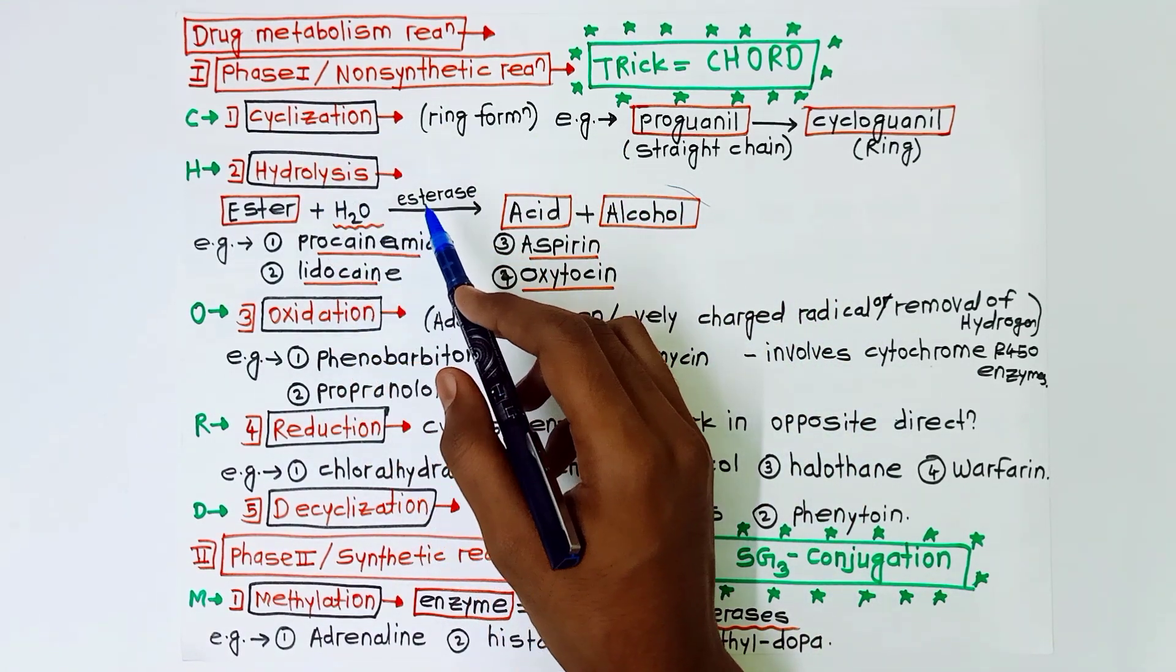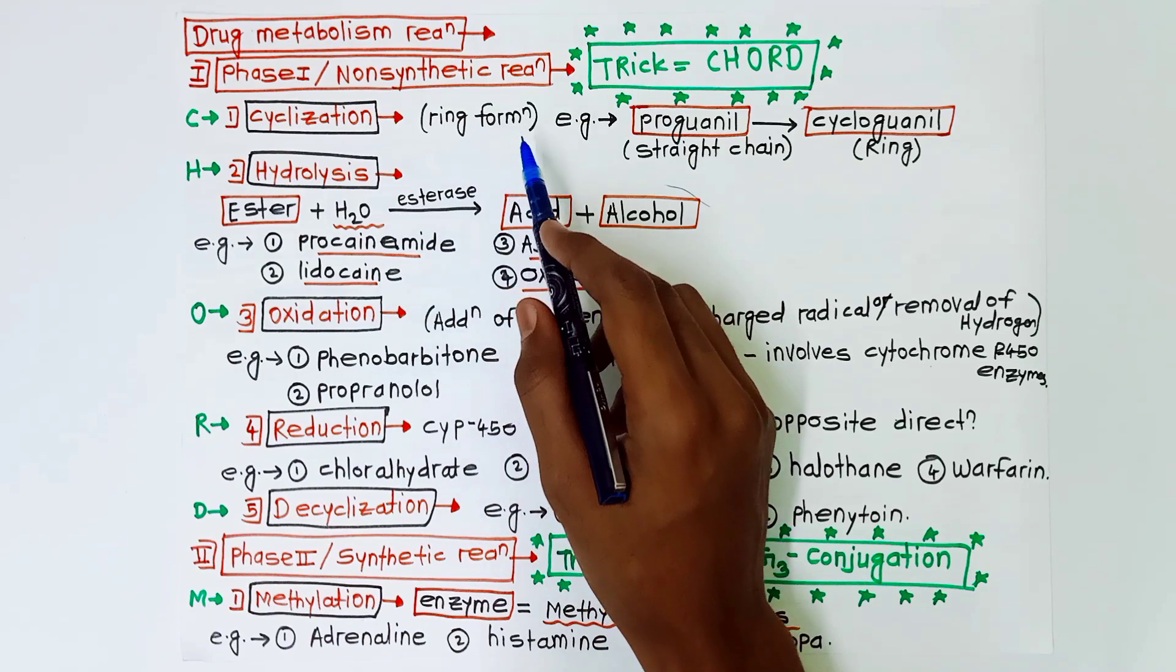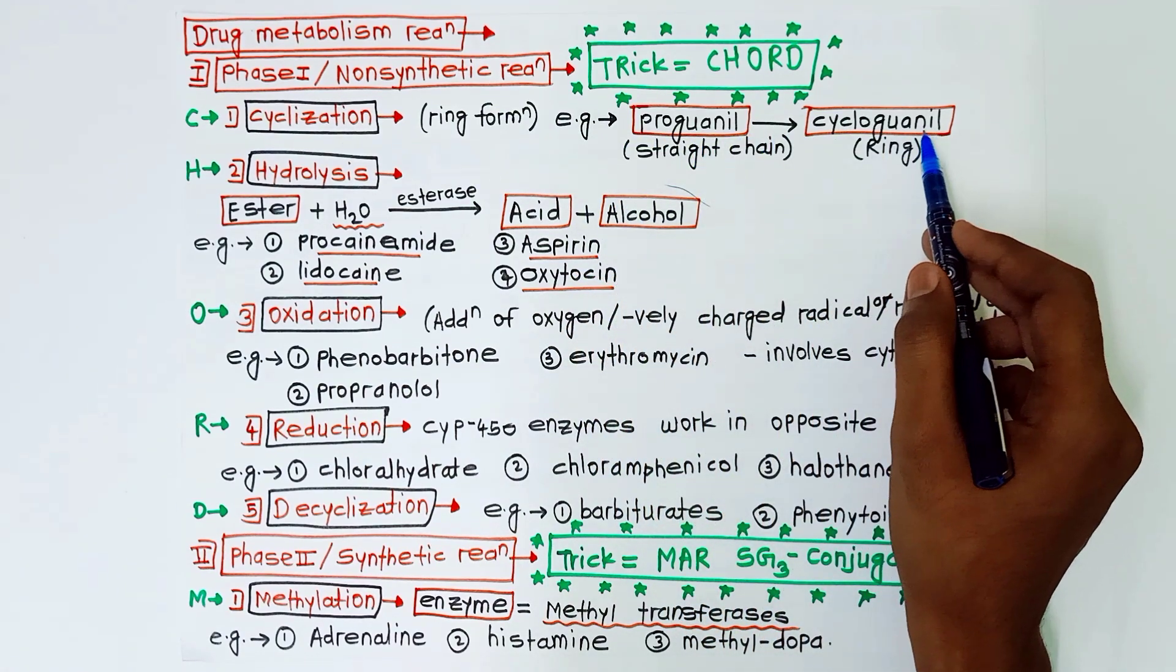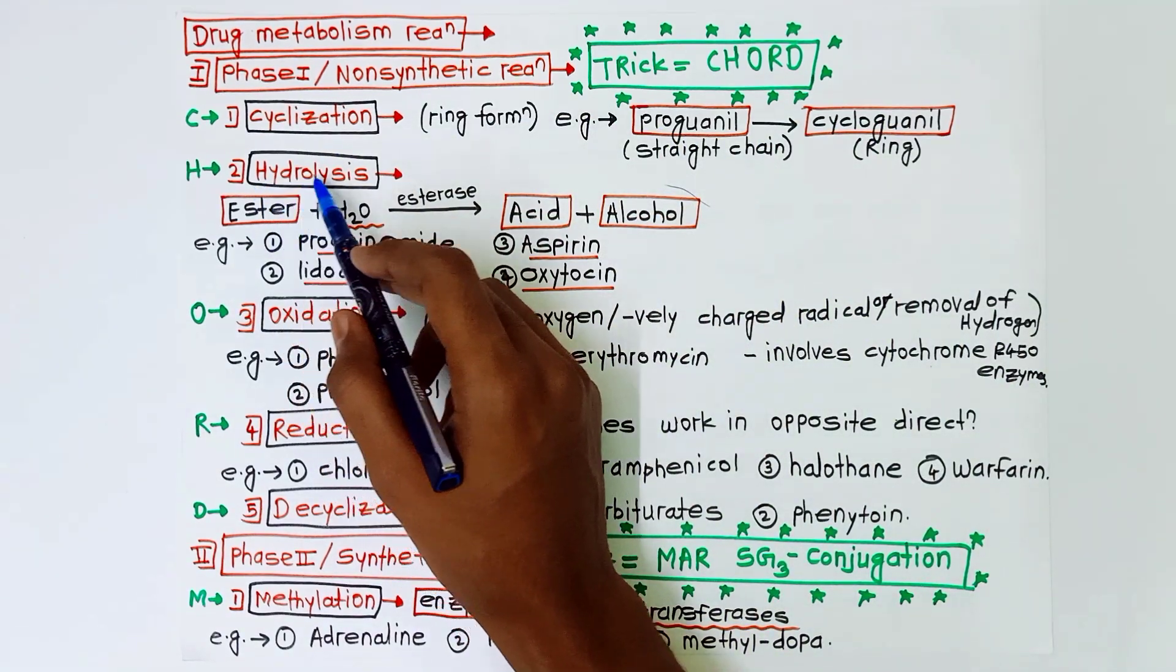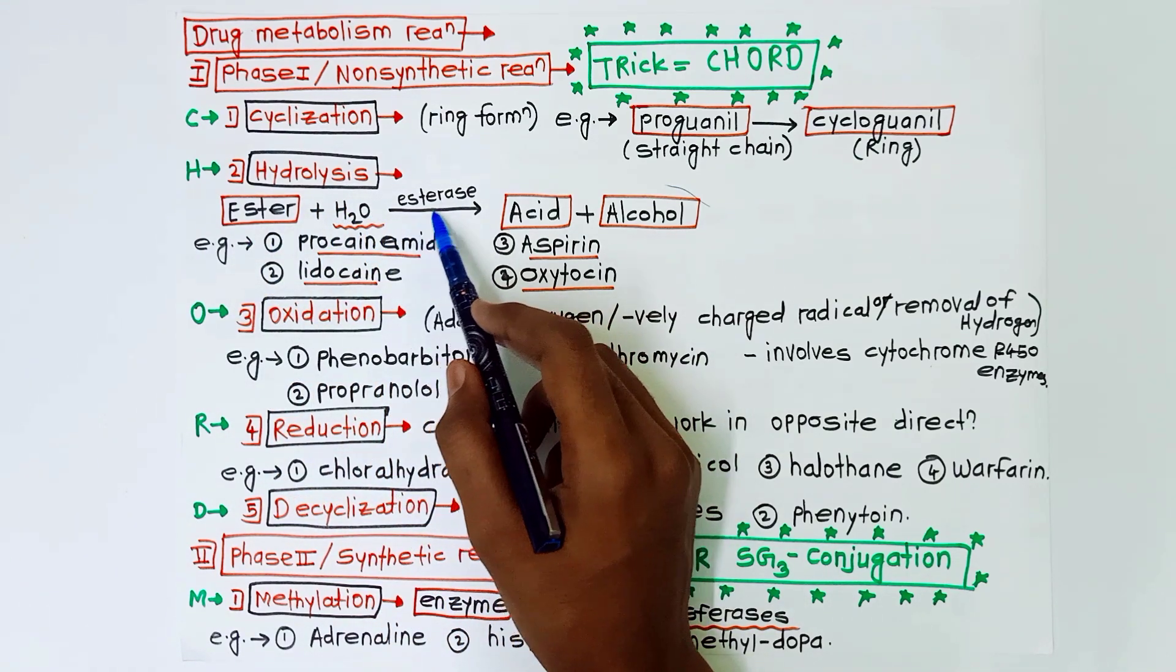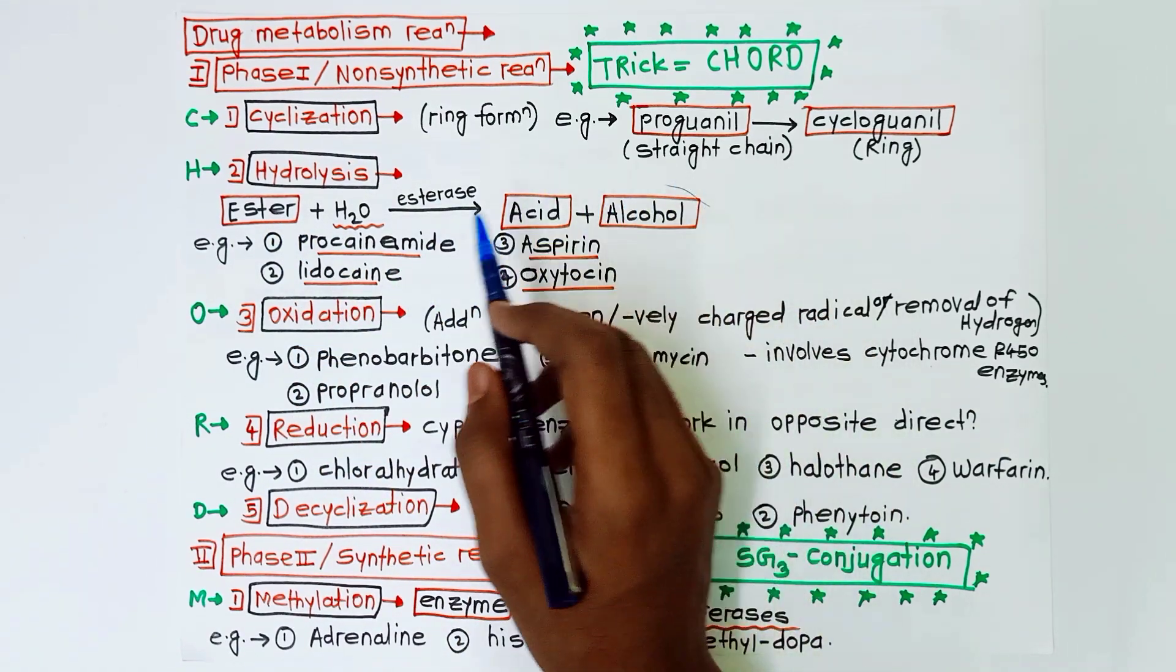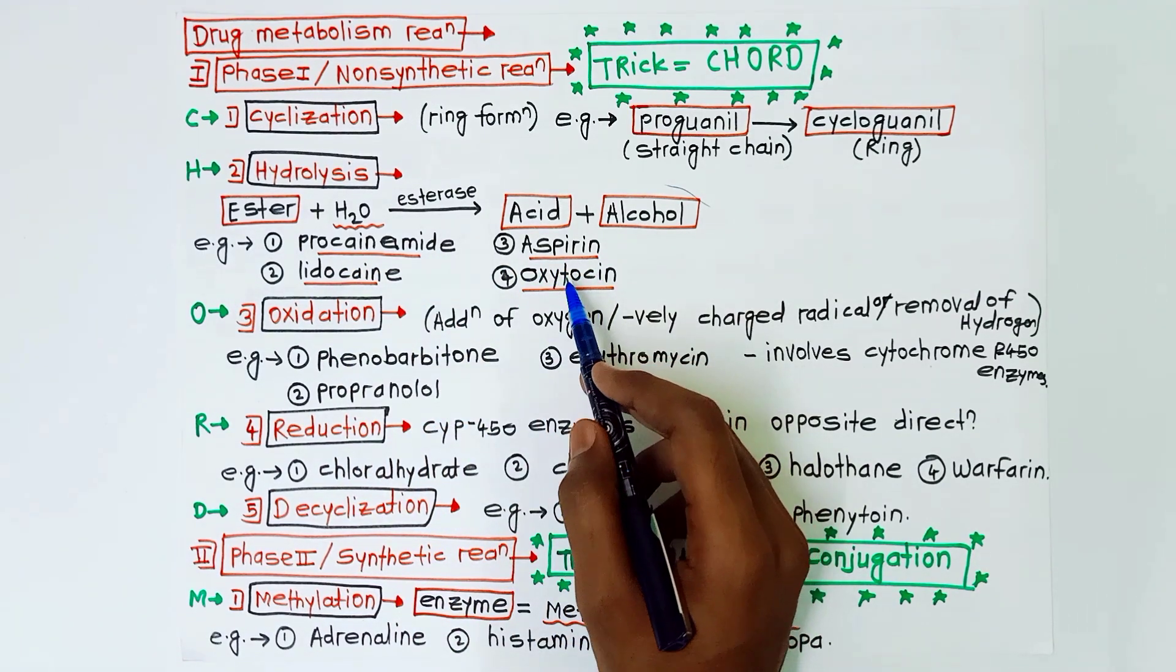They will ask you examples of this also. First of all, cyclization means ring formation. The example of this is proguanil converted into cycloguanil, so the straight chain compound converts into ring-shaped compound cycloguanil. Then hydrolysis: in this, ester is hydrolyzed with the help of water in presence of the enzyme esterases into acid and alcohol. Examples are procainamide, lidocaine, aspirin, and oxytocin - they undergo hydrolysis.